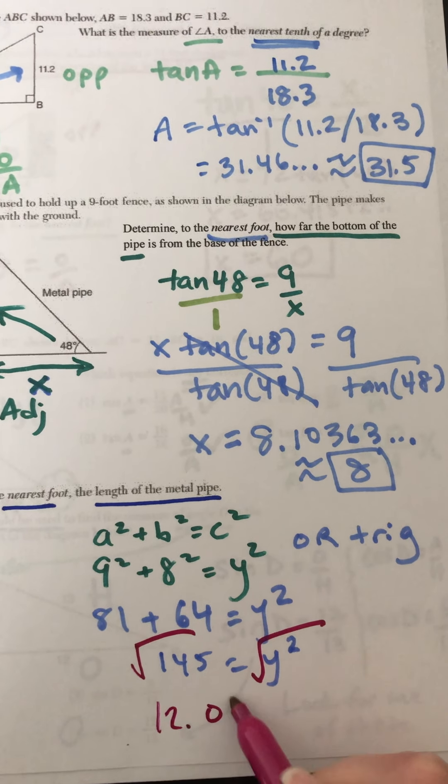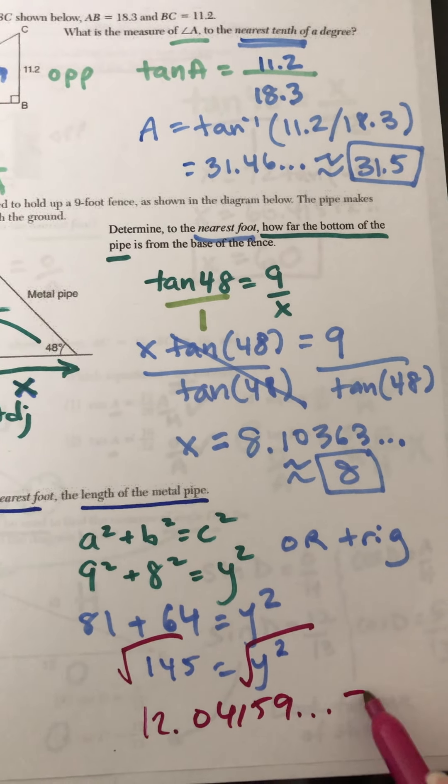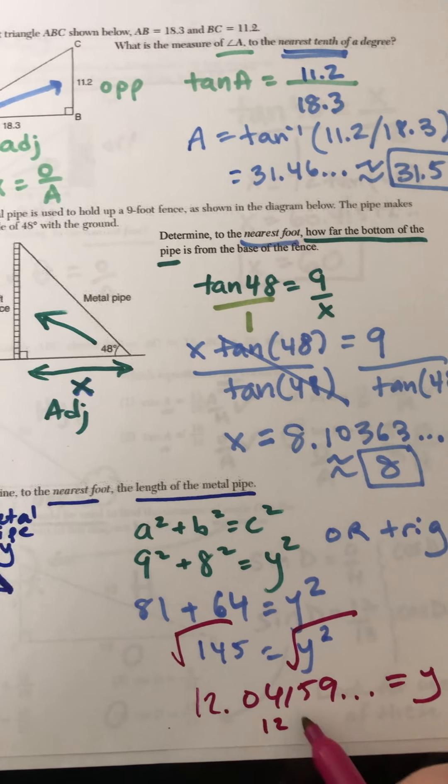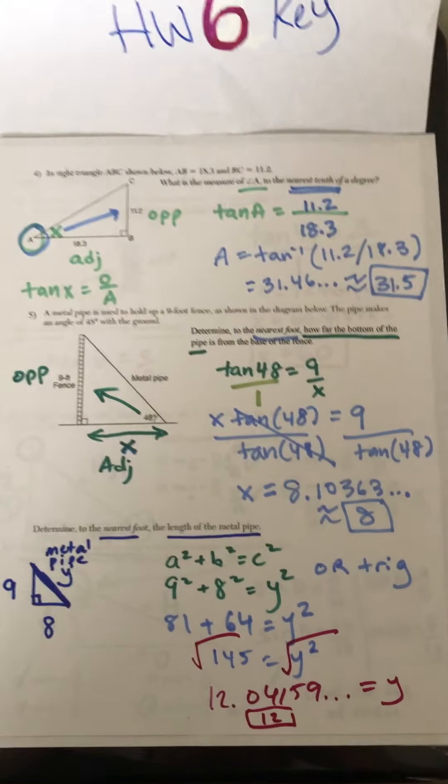You get 12.04159 dot dot dot is Y nearest foot. That's 12.